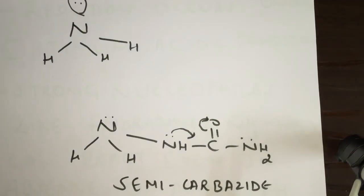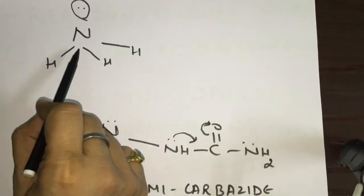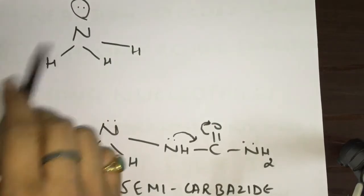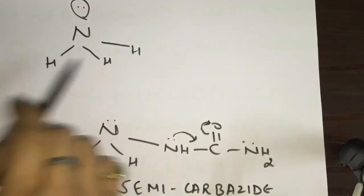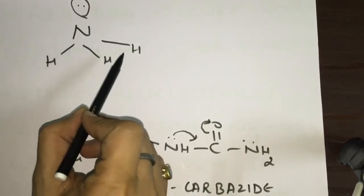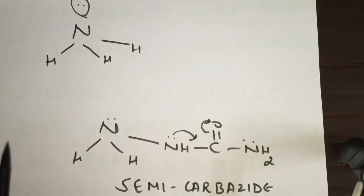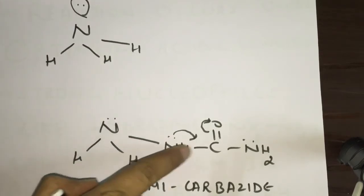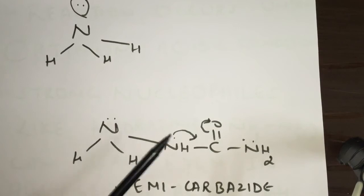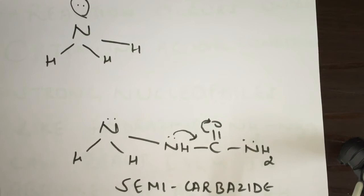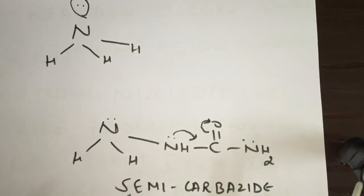Ammonia is this molecule — nitrogen with three hydrogen atoms. If from ammonia a hydrogen atom is removed and a whole group is put in its place, the resulting molecule N-H-CO-NH2 is termed as semicarbazide. So semicarbazide is an ammonia derivative.